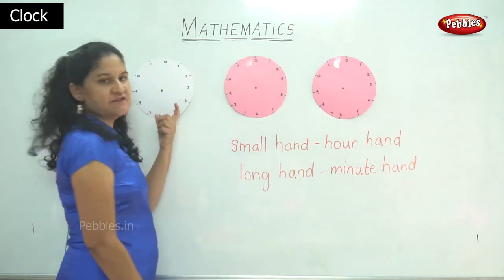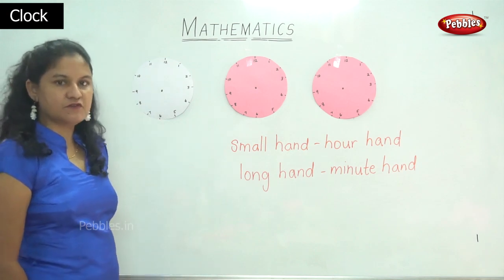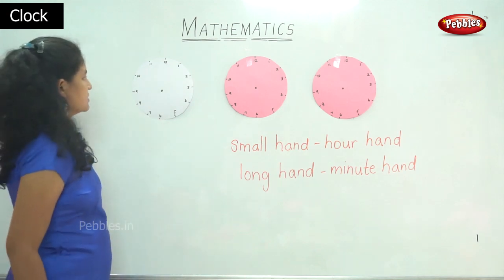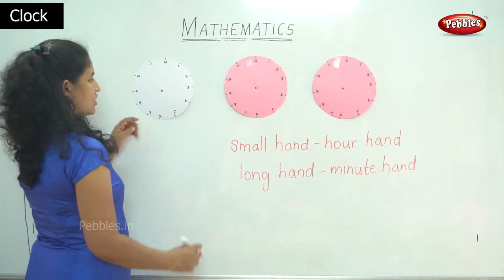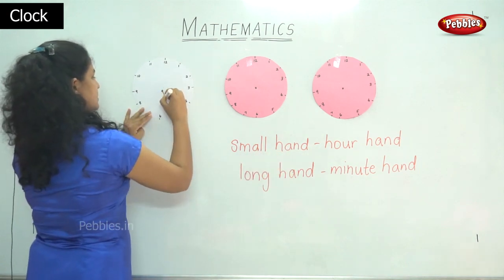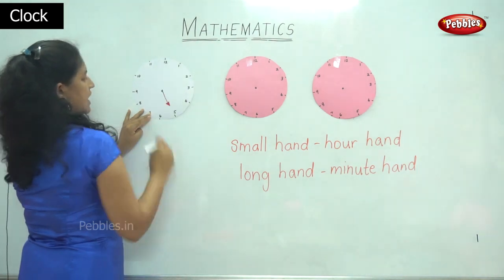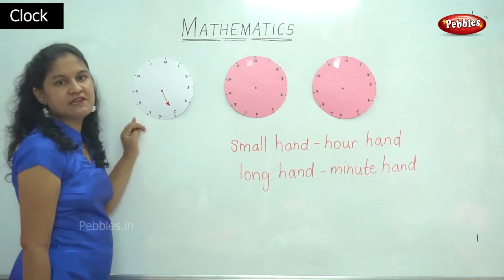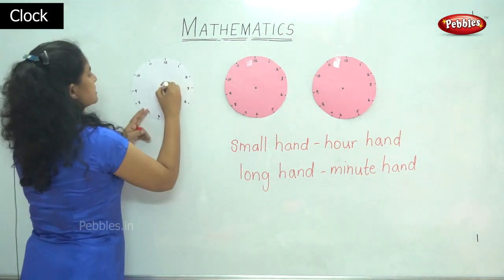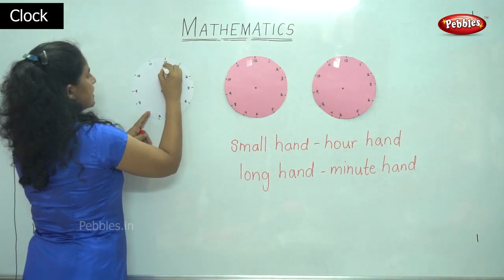In my first clock I am going to mark the timing for five o'clock. When it is five o'clock, the small hand or the hour hand points towards number five, and the long hand or the minute hand points towards number twelve.